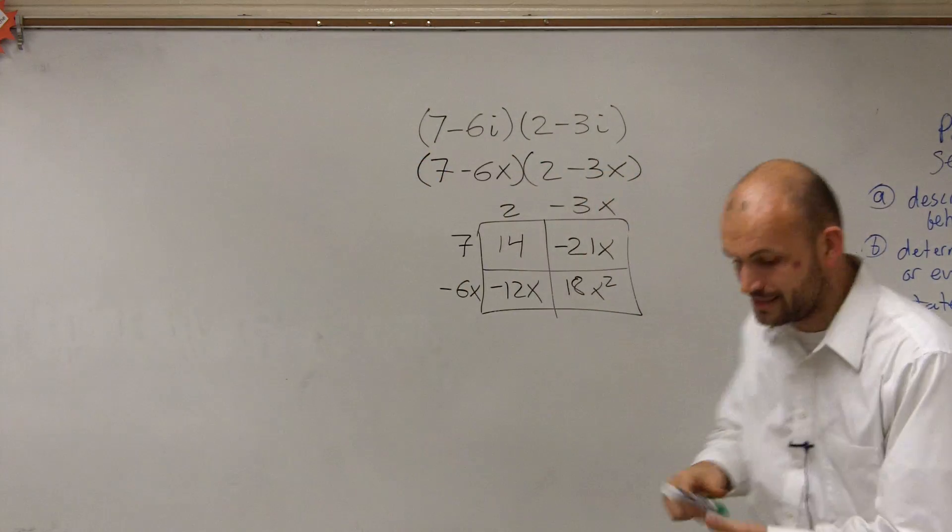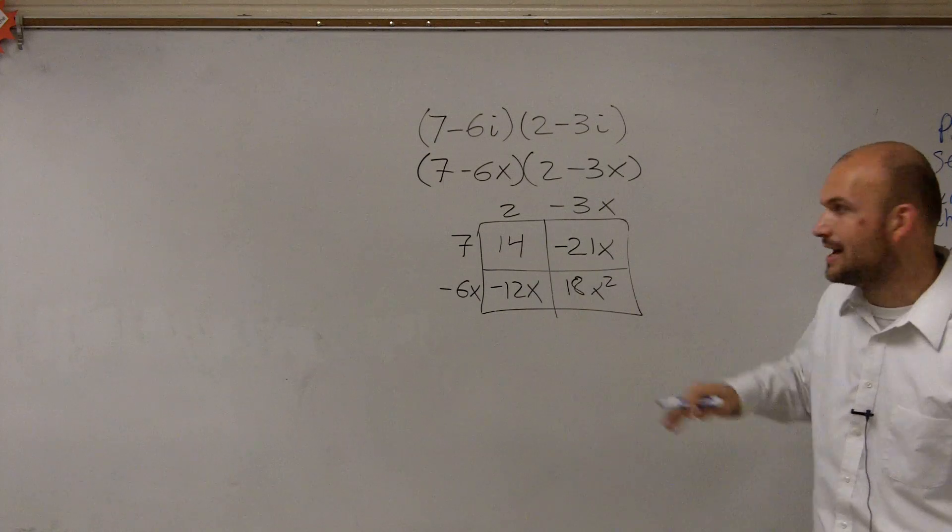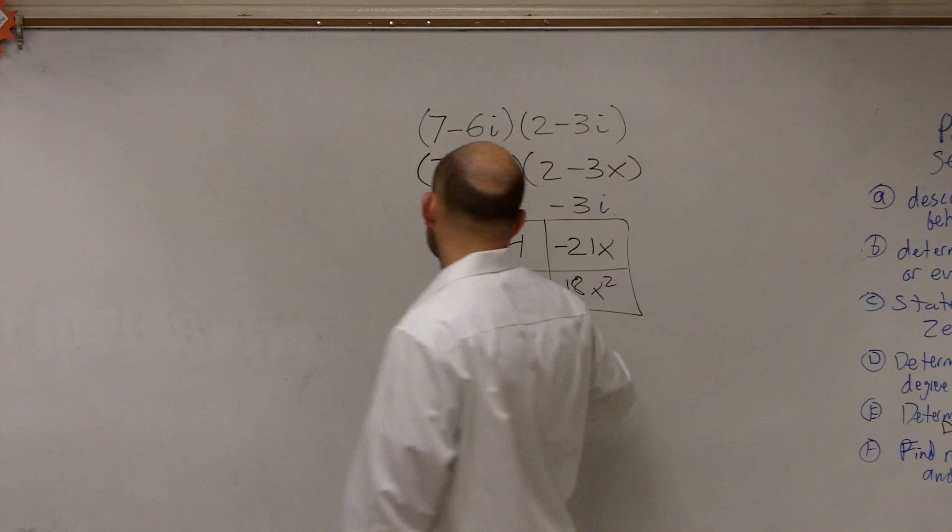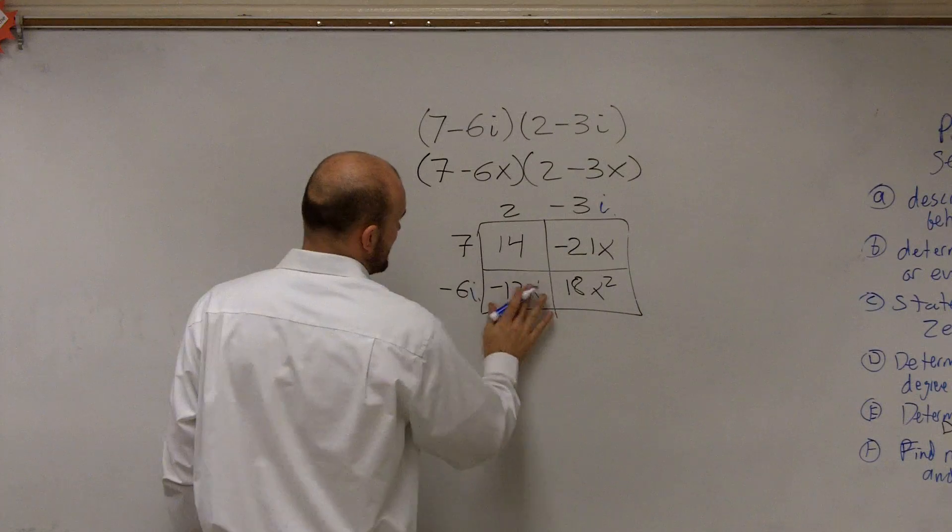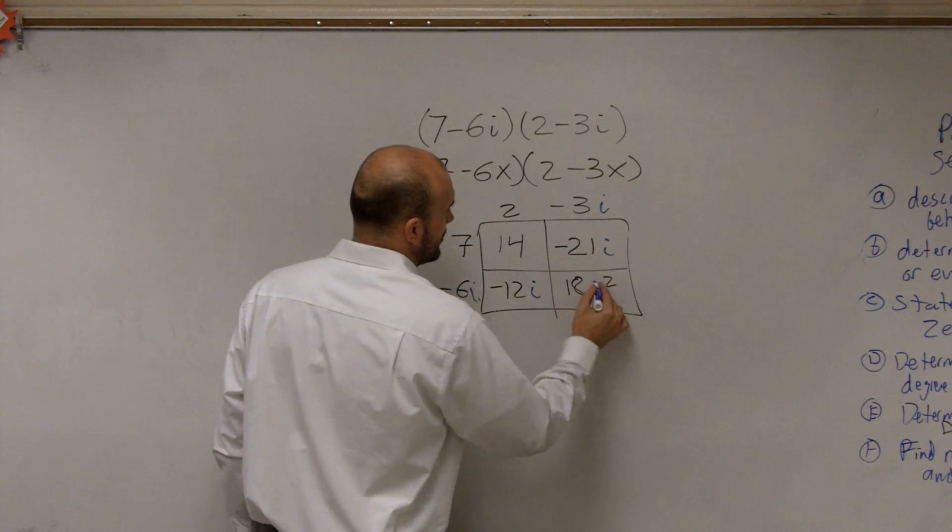So we haven't used the i yet, alright? So to incorporate the i, just kind of replace the x's with the i's, alright? And that's what I want. You guys don't have to use the x's, but I'm trying to make a point here, is that we multiply with i's just like we would with any other variable.